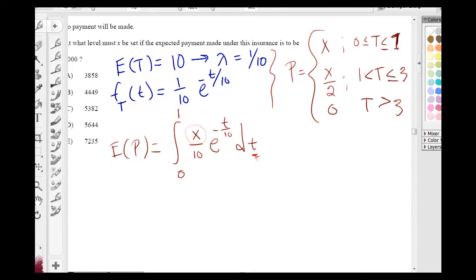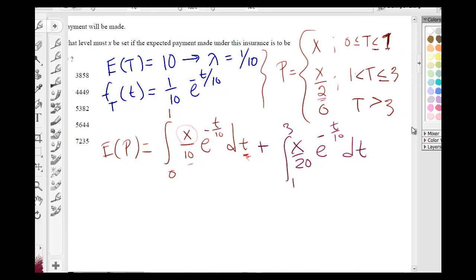Okay, so we have that, and then this is plus the integral going from 1 to 3 of X over 20, it's just 2 times 10, e to the negative t over 10 dt. And after that, it's just going to be 0.